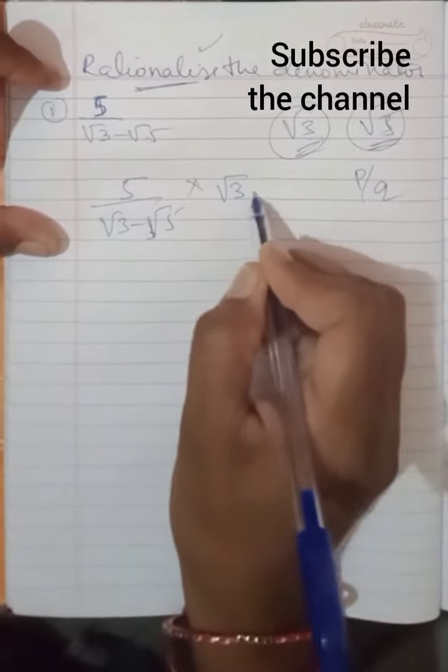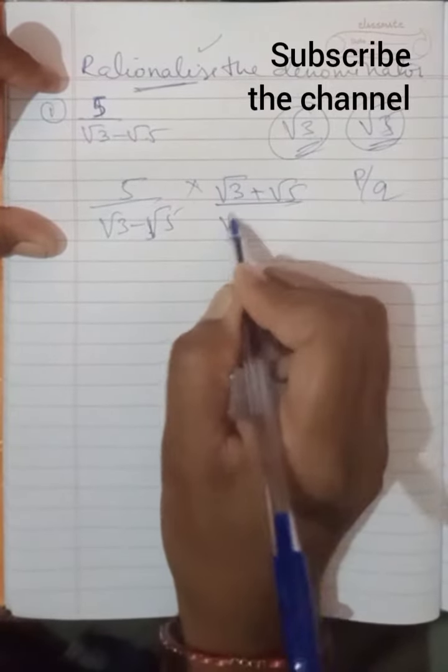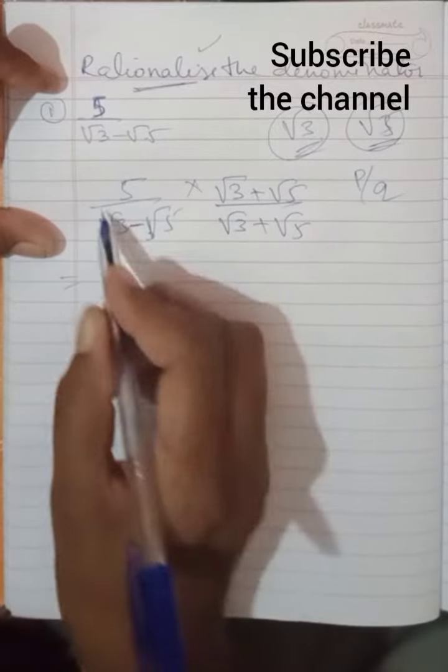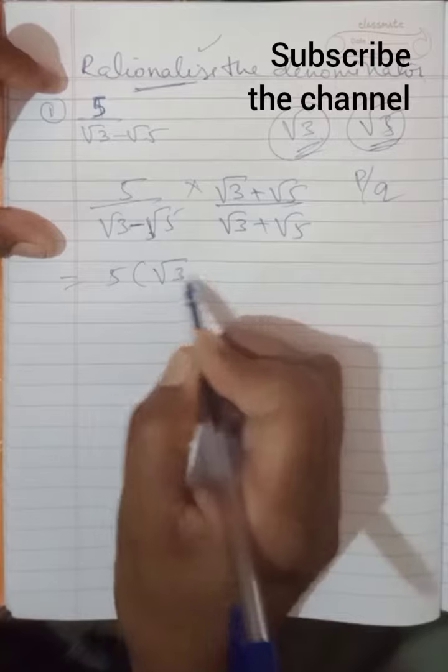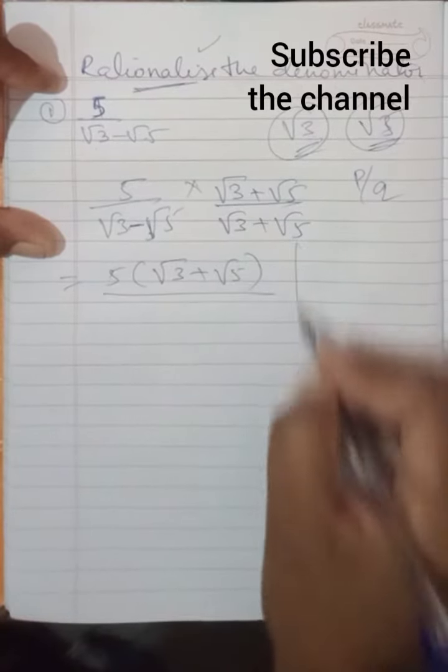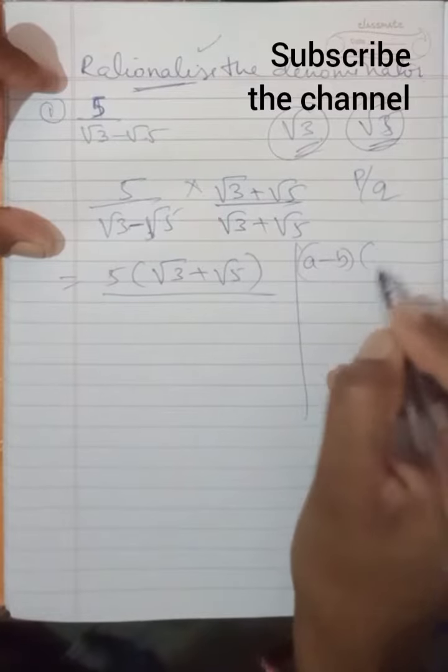I'm multiplying this one with root 3 plus root 5 divided by root 3 plus root 5. Just take the opposite of this sign. 5 gets multiplied, so put the bracket for easy calculation. This one here is in the form of a minus b into a plus b.